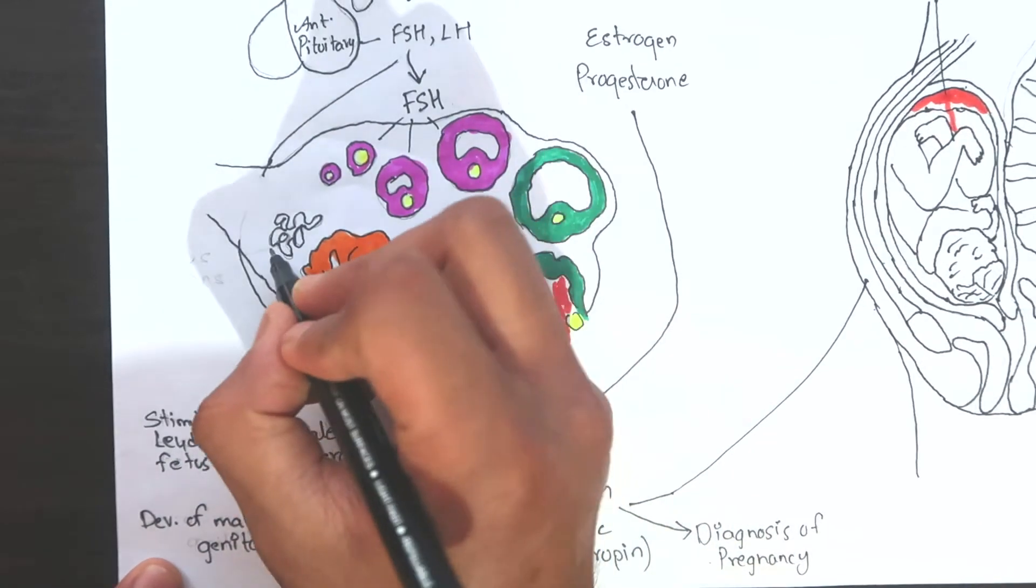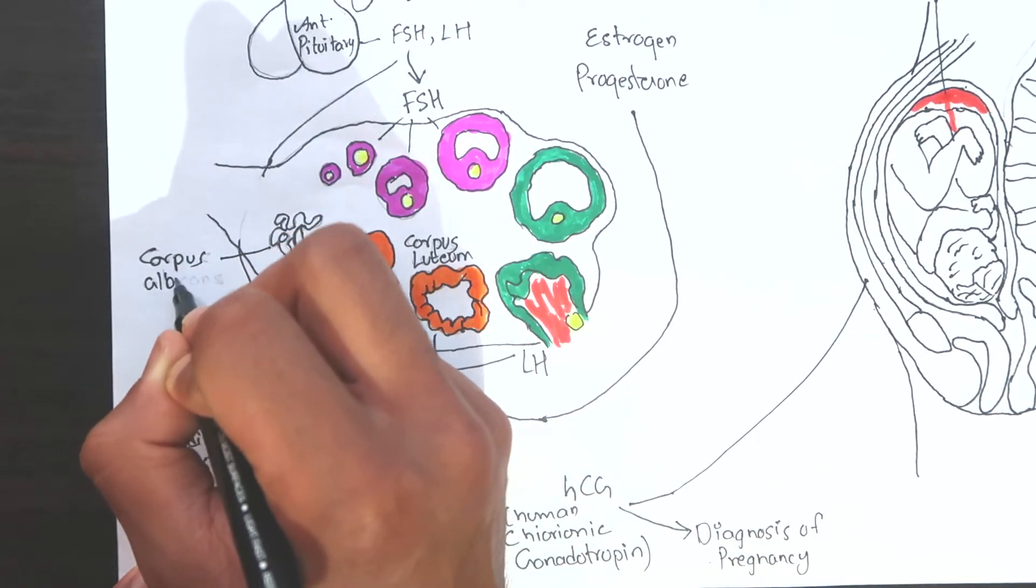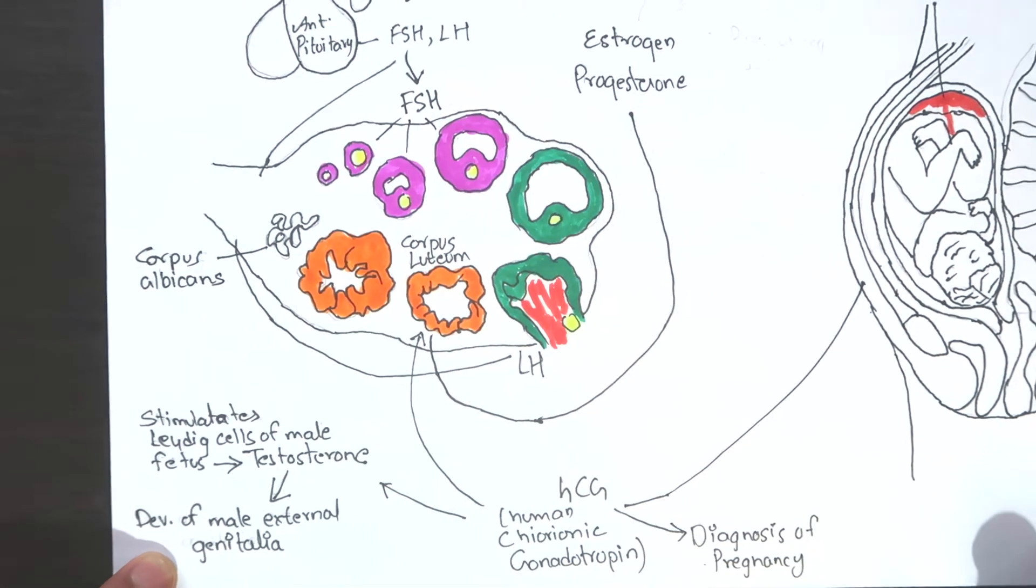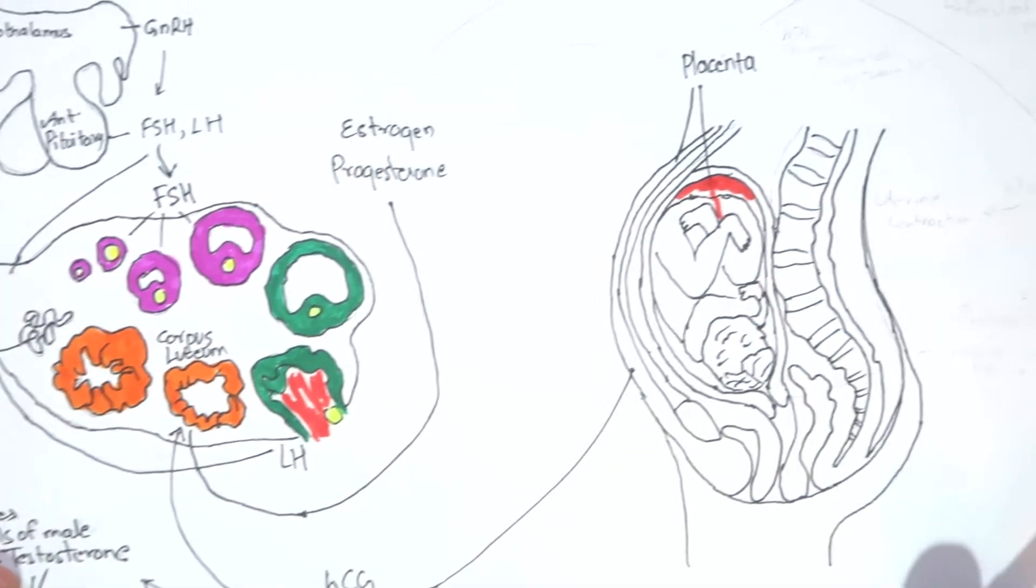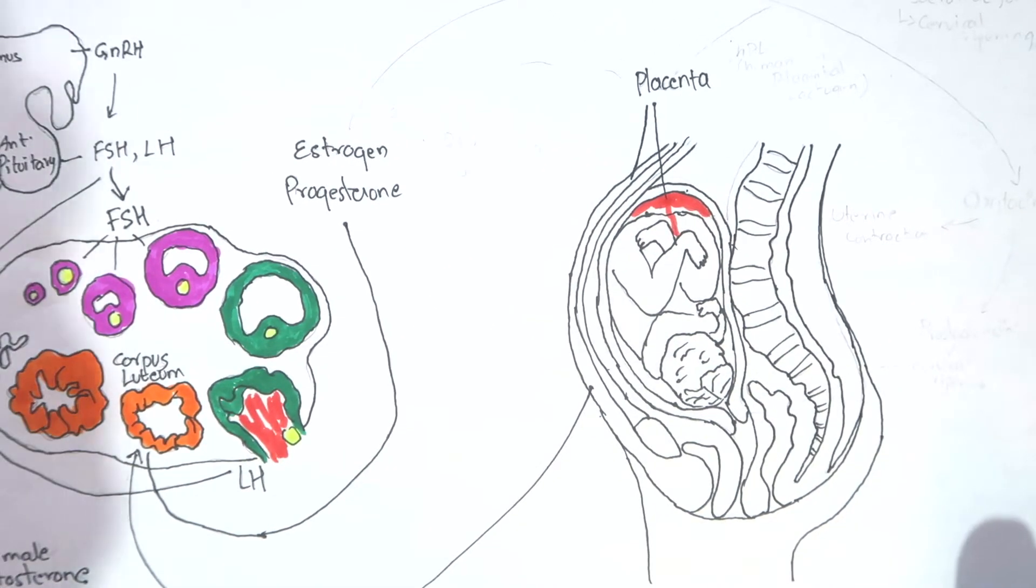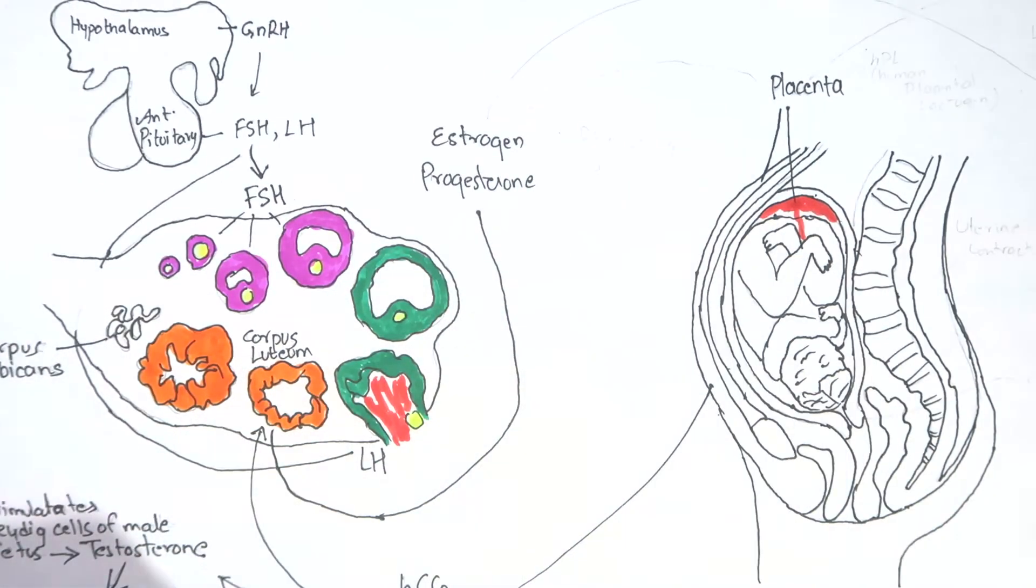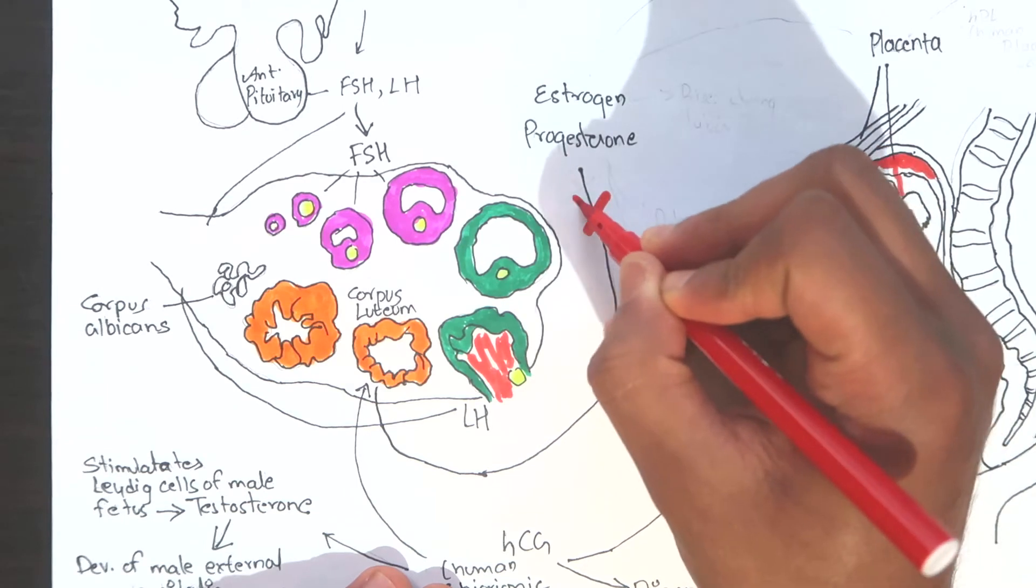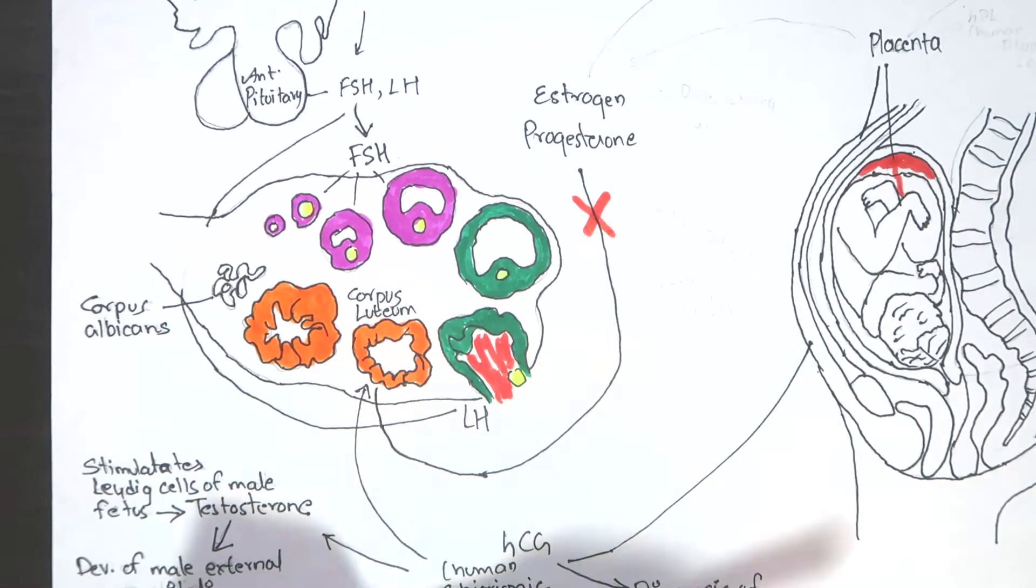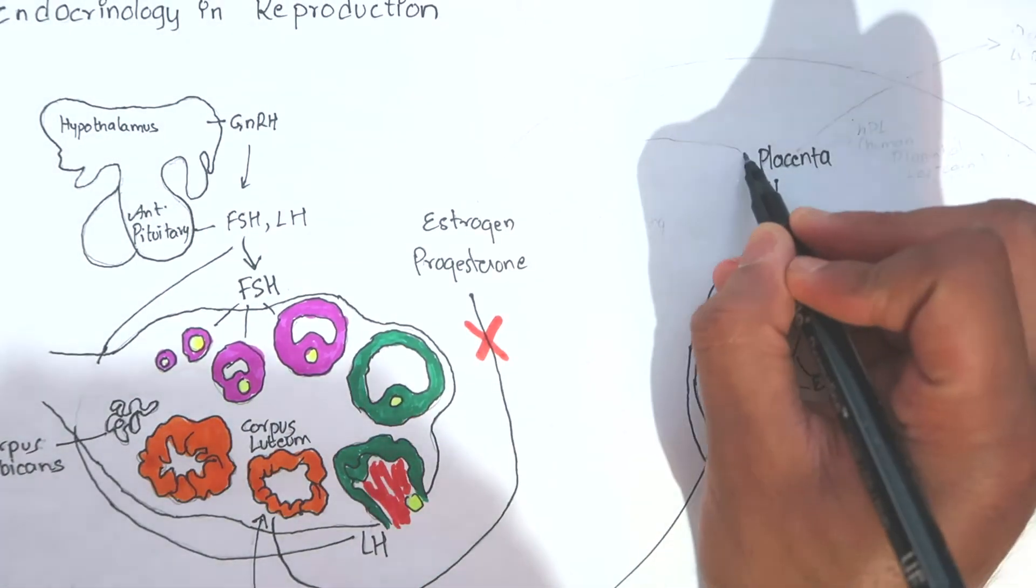Without HCG, corpus luteum would degenerate to form white scar tissue called corpus albicans. After the development of the placenta, the corpus luteum degenerates and its function is now taken over by the placenta. So the placenta now produces the essential hormones and acts temporarily as a new powerhouse or endocrine organ.